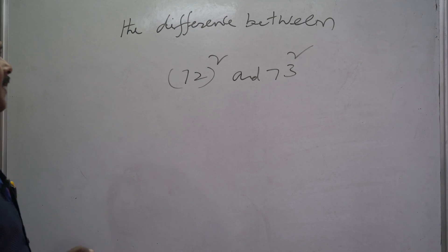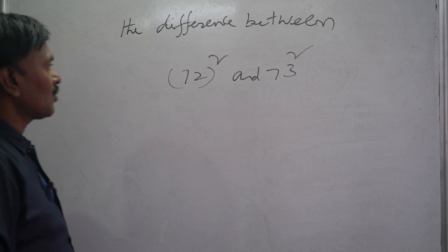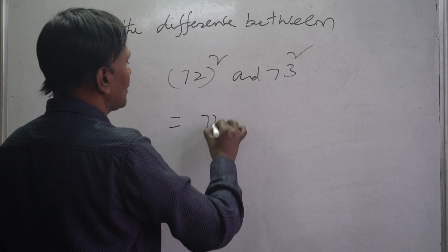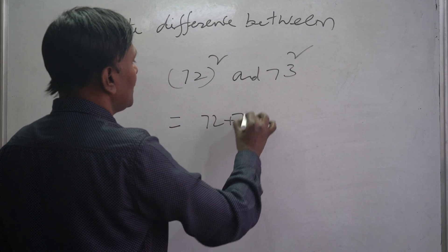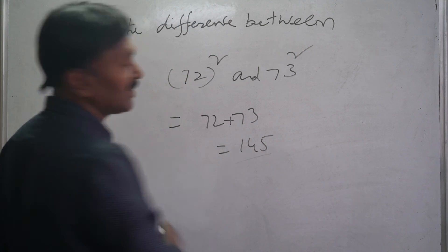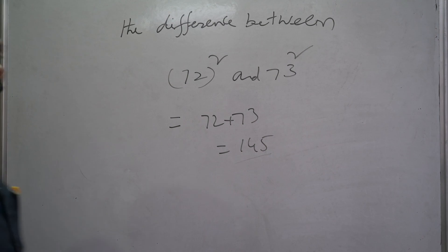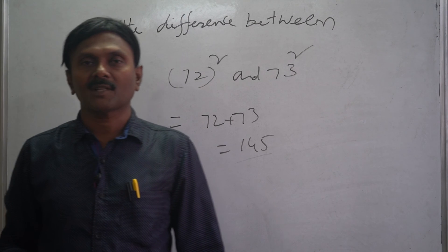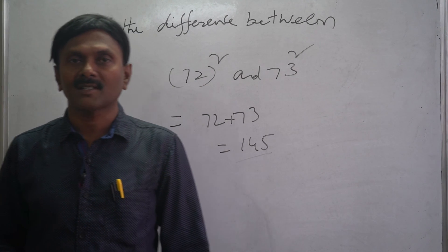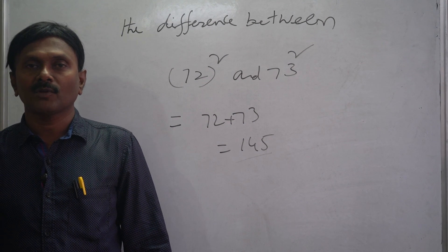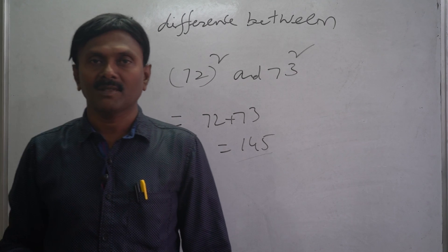Here, the difference between 72 square and 73 square — applying the same rule: 72 plus 73 equals 145. That is the answer. I hope you understood well. If you like this video, share it and subscribe. Our channel is A Learning Room and our website is www.alearningroom.com. Thank you very much.